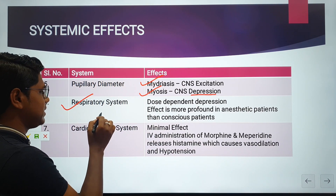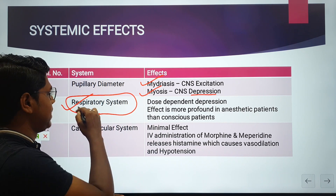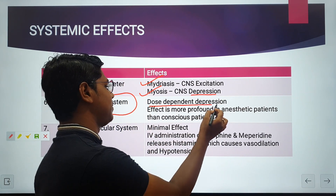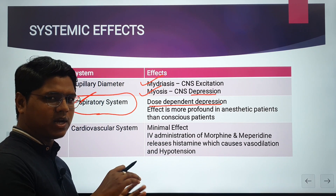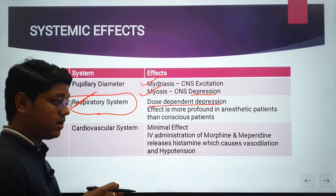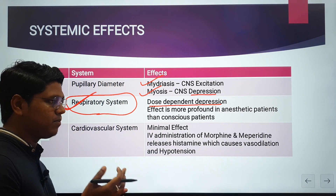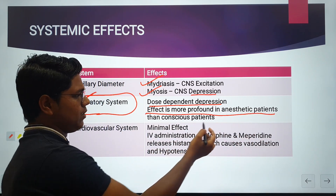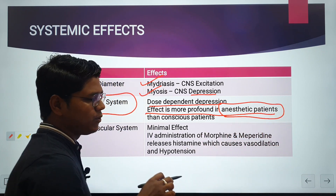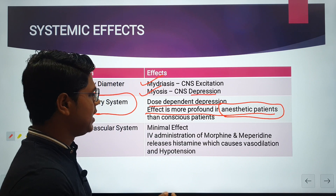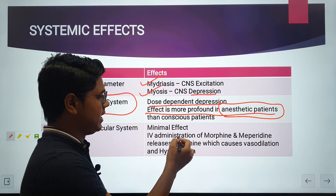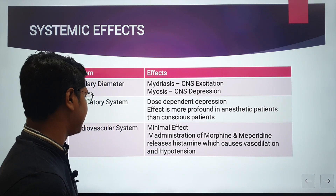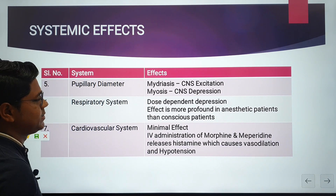Respiratory system: the main reason opioids are avoided is their effect on the respiratory system — they cause dose-dependent respiratory depression. That is why they are not commonly used, but butorphanol, which causes minimal respiratory effects, is now getting popular in veterinary medicine. The effect is more profound in already anesthetized patients; in conscious patients, the effect is less pronounced, though some degree of respiratory depression still occurs.